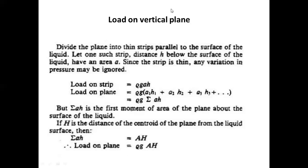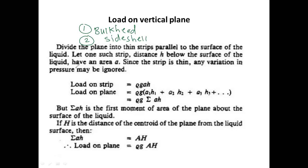The vertical plane — in the case of a ship, the vertical plane means you will have a bulkhead and the second one is the ship's side. These are the two vertical planes you can consider in a ship. In today's class we are going to find out the load acting on the vertical plane and how this load varies from the free surface to the bottom of the ship.